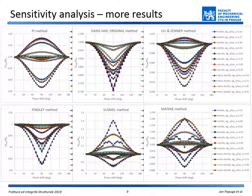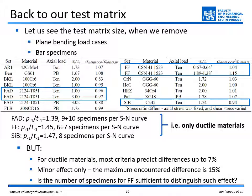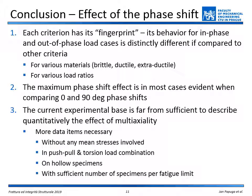By coincidence, all the more credible experimental data items belong to ductile materials, which for most tested criteria show very limited phase shift effect. The final verdict thus could not be stated and the question remains open for future experimental work.